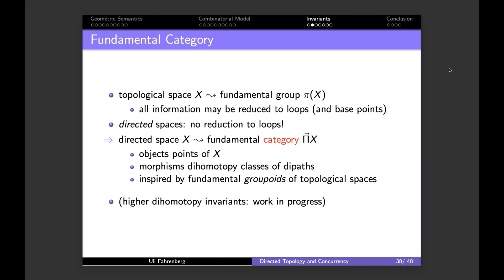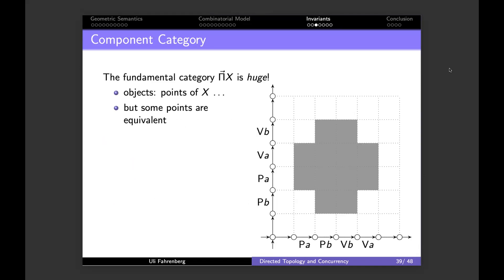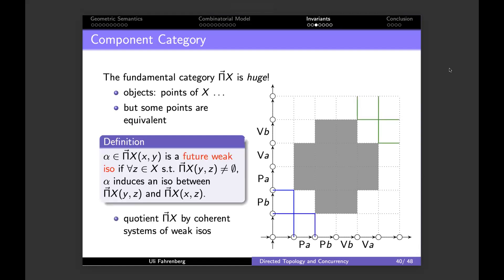The fundamental category is huge — its objects are all the points in the space, which is an uncountable set. To make it manageable, we notice some points are equivalent and introduce the component category. You can group points by the choices available to them.